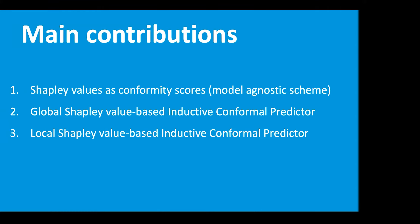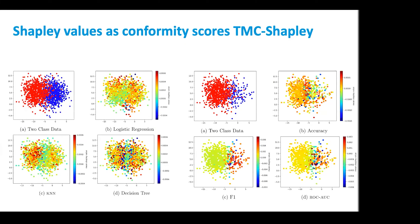Our main contribution is the proposal to use data Shapley values as conformity scores in a model-agnostic scheme, and to implement those Shapley values to construct inductive conformal predictors. Shapley values encode the contribution of any instance to the performance of a classifier for a classification task given a validation set. This contribution is positive if the instance conforms to the data distribution and supports the optimal decision boundary, or negative if it does not.